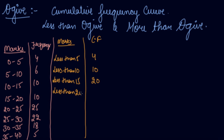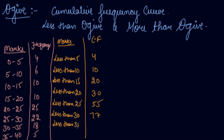Less than 20: 20 plus 10 is 30. Then less than 25: 30 plus 25 is 55. Less than 30: 55 plus 22 is 77. Less than 35: we have found 77 so far, so 77 plus 18 gives you 95. And less than 40: all the students are less than 40, so 95 plus 5 becomes 100.